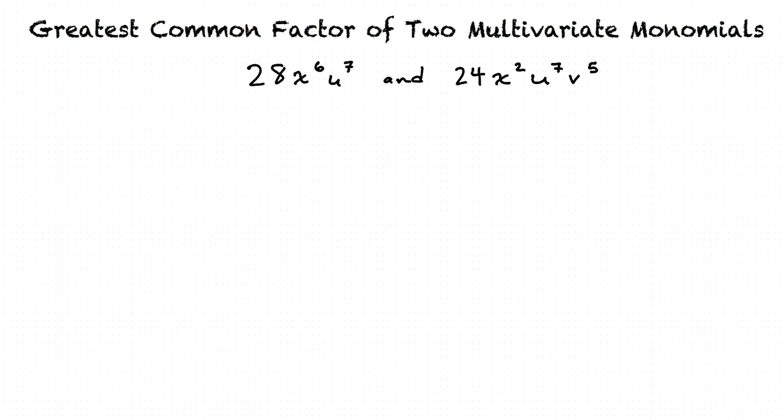Just really quickly, what is a greatest common factor? Great question. A greatest common factor, or GCF, of two numbers is the largest factor of both numbers.